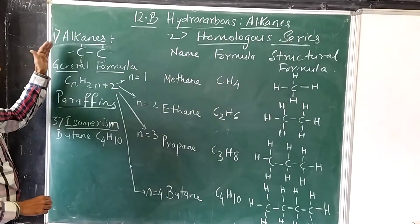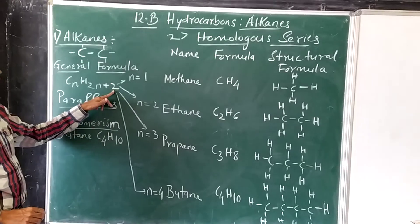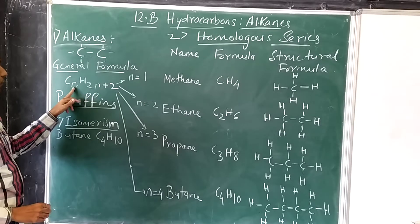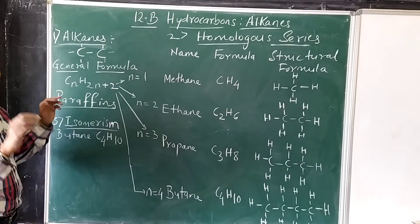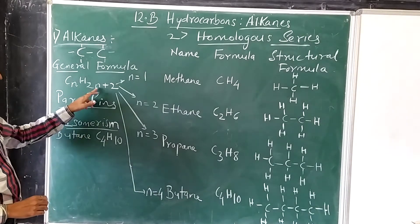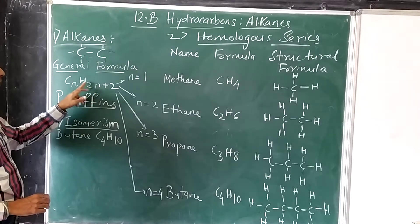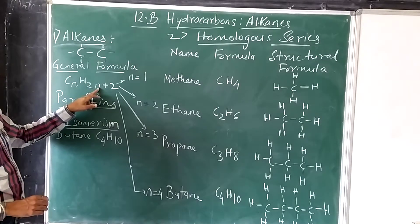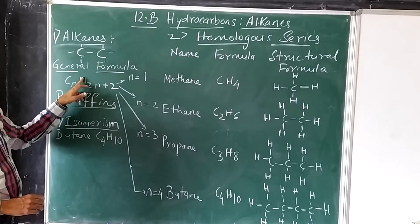The general formula of alkanes is CnH2n+2, where n stands for number of carbon atoms, and this n stands for number of hydrogen atoms.